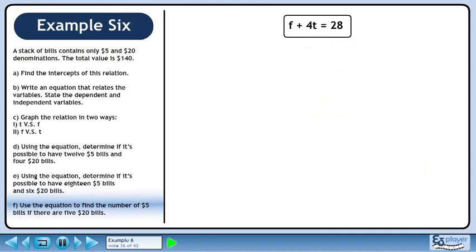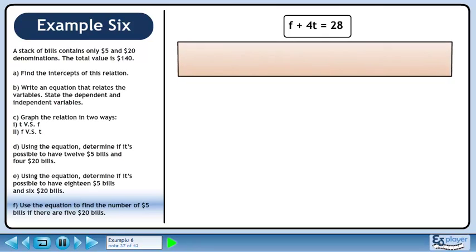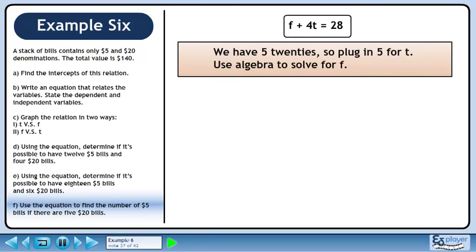In Part F, we'll use the equation to find the number of $5 bills if there are 5 $20 bills. We have 5 20s, so plug in 5 for t. Use algebra to solve for f.